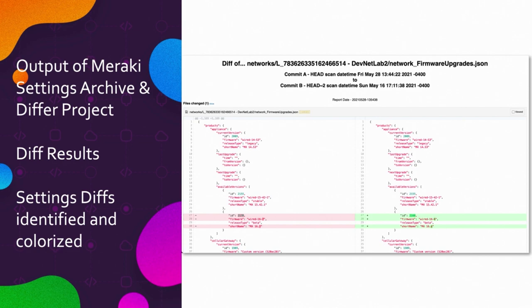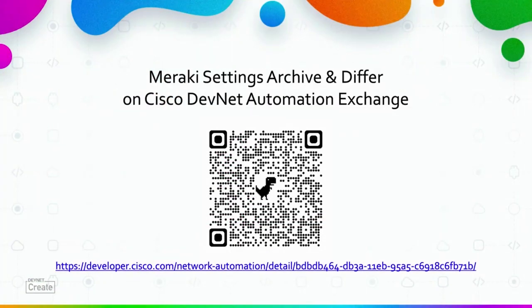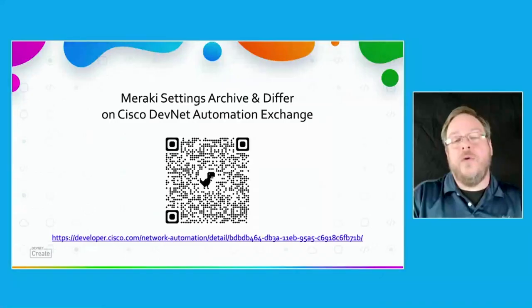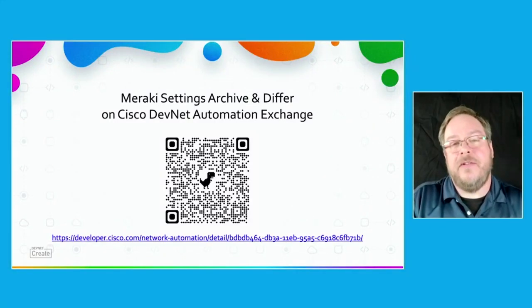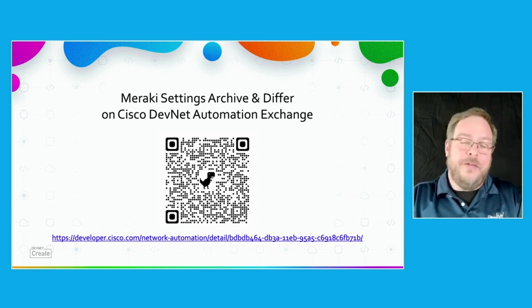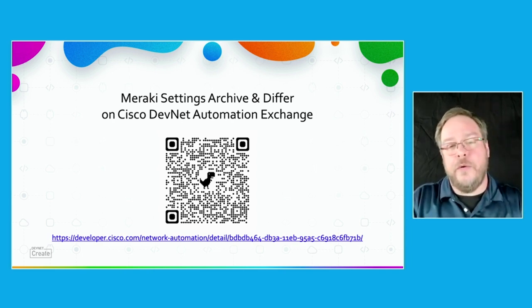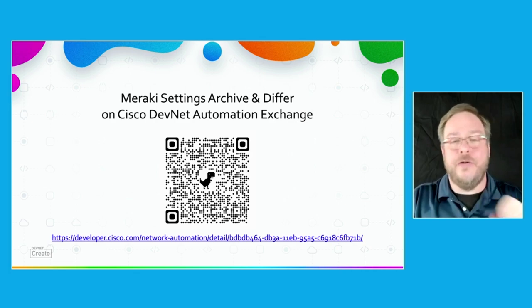If you liked what you saw, here's the QR code and URL to go to Cisco DevNet Automation Exchange. We have released this into the open source community — we want you to use it, we want you to participate to add new features. And if you don't want to participate, that's fine too. You can download the code, fork it off, do your own thing, and still enjoy the information and effort that was used to create what you saw.